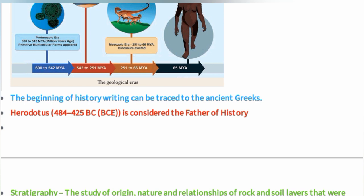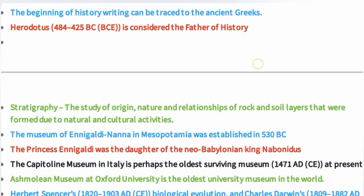History - ancient Greeks. Herodotus is considered the father of history. Herodotus lived from 484 to 425 BC.